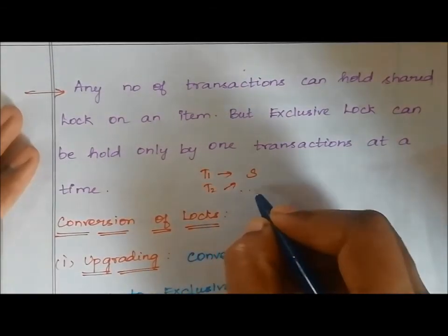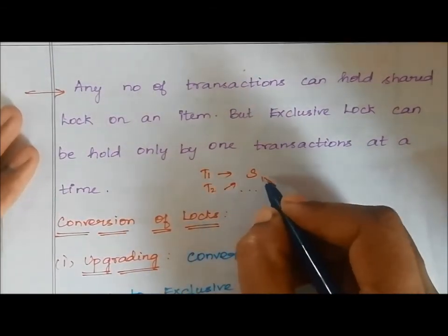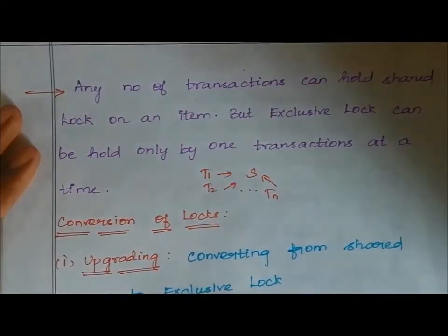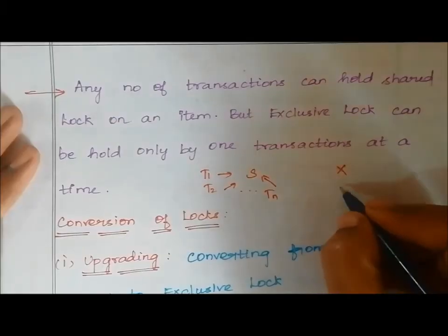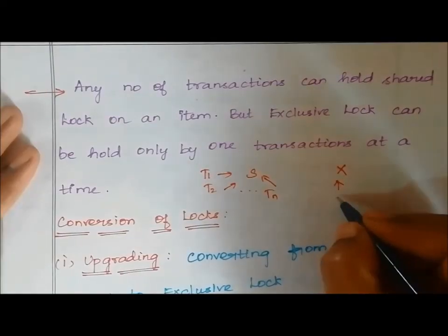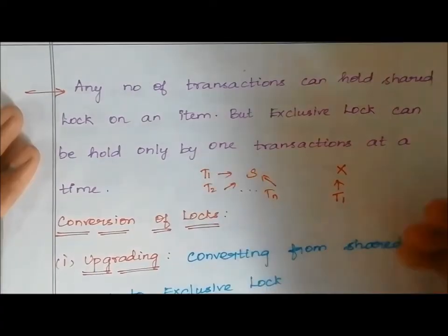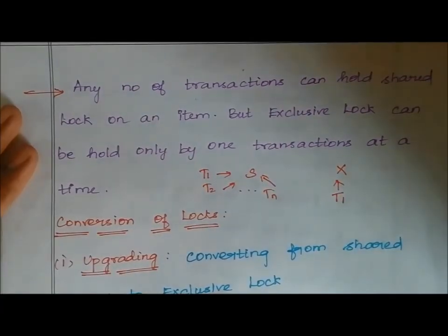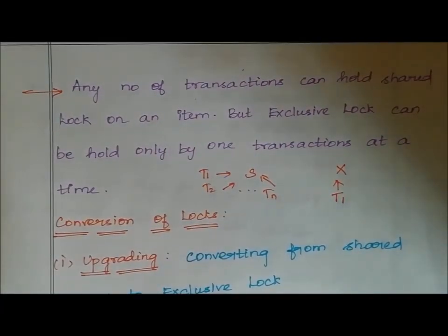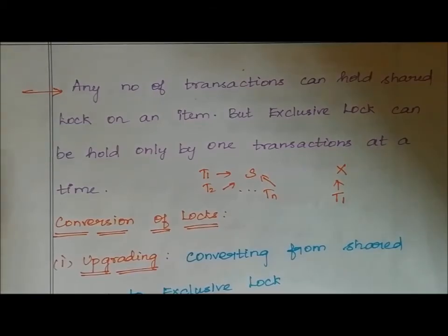Shared lock can be used by any number of transactions because it only allows read operations. Exclusive lock is limited to one transaction at a time because it allows both read and update operations — allowing multiple transactions would cause inconsistency. That is why only one transaction can use an exclusive lock.